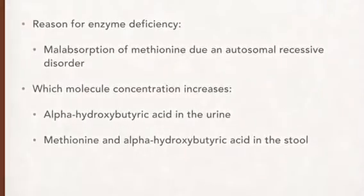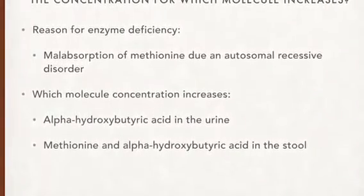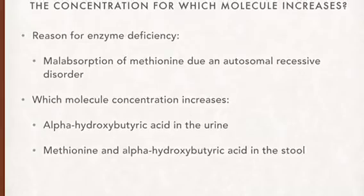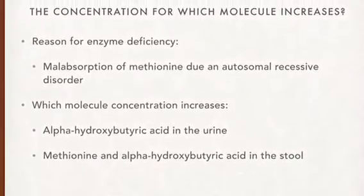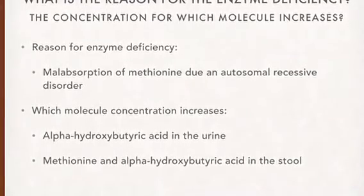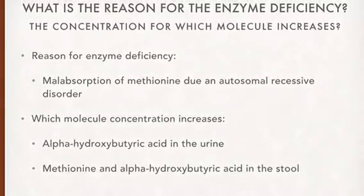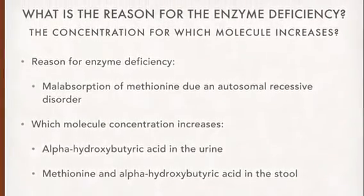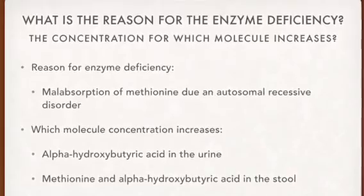The reason for enzyme deficiency is the malabsorption of methionine due to an autosomal recessive disorder. Which molecule concentration increases? Alpha-hydroxybutyric acid in the urine, methionine, and alpha-hydroxybutyric acid in the stool.